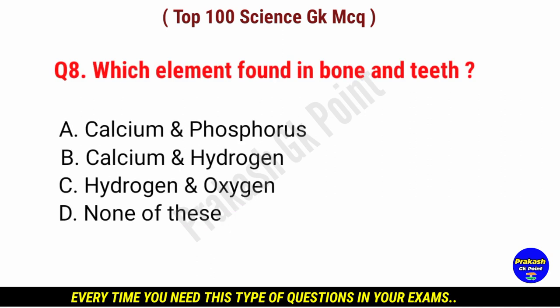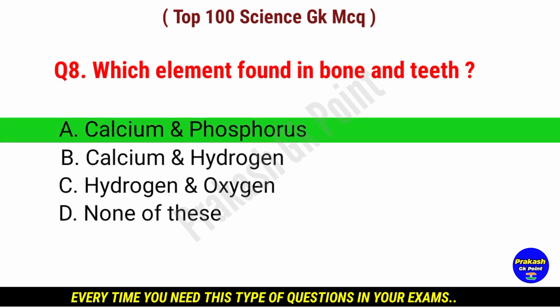Which element is found in bone and teeth? Answer: option A, calcium and phosphorus.